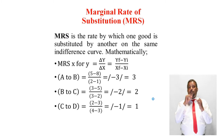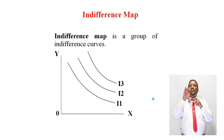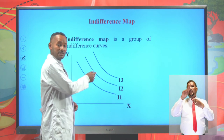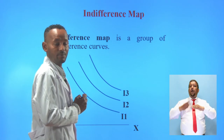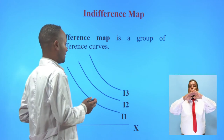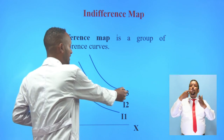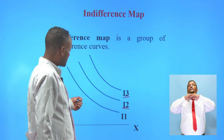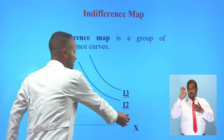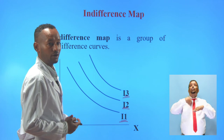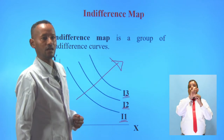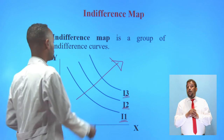We can calculate the marginal rate of substitution in this way. An indifference map is a group of indifference curves. Higher indifference curves represent higher levels of satisfaction, and lower indifference curves represent lower satisfaction. The satisfaction from indifference curve 3 is greater than from curve 2, which is greater than from curve 1. The level of satisfaction increases as one moves towards the north-east, and decreases as one moves towards the south-west.